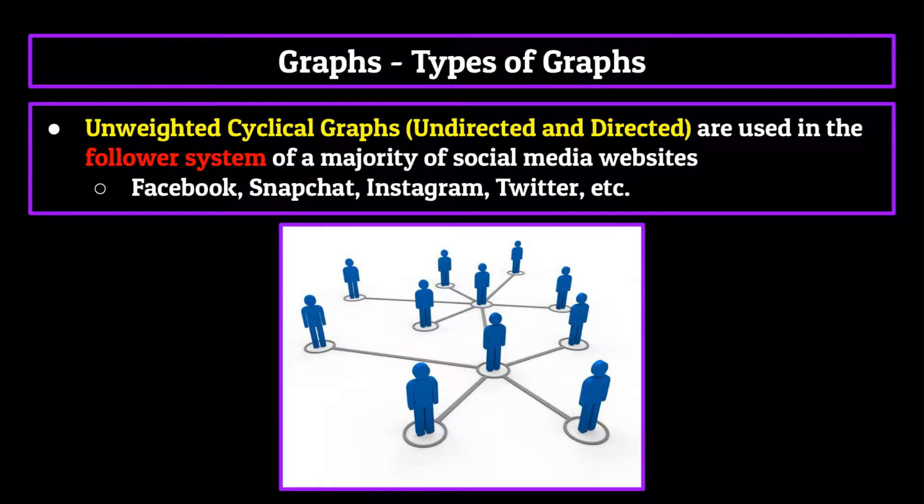Another type of graph which you probably use quite often is the unweighted cyclical graphs, both undirected and directed, as these make up the follower system of a majority of social media websites. We already talked about these in the case of Facebook, which would use cyclical representations, as well as Instagram, which would use an acyclical representation.